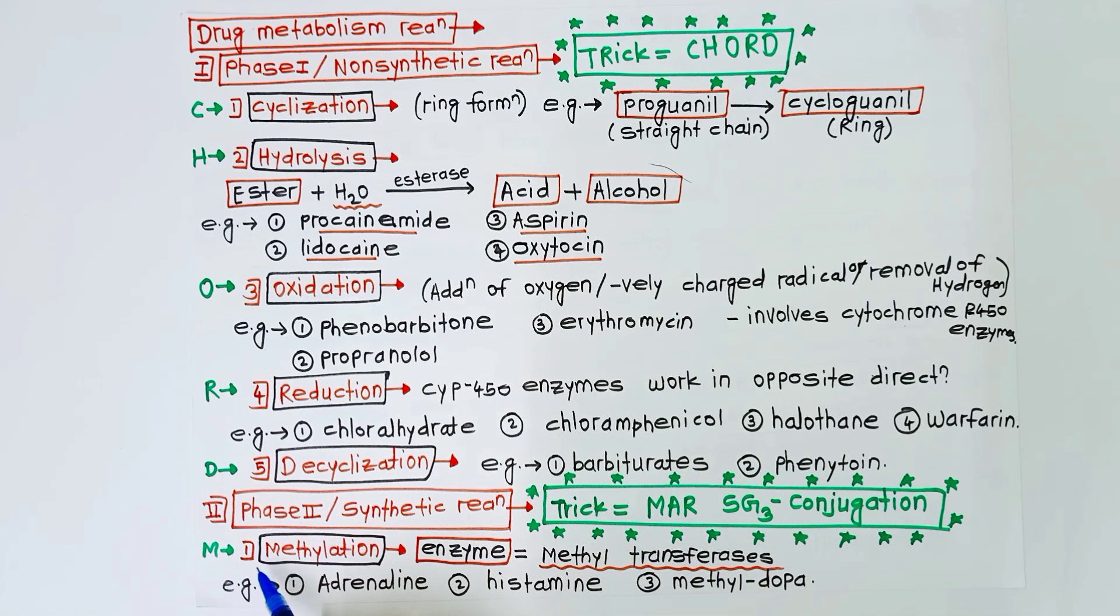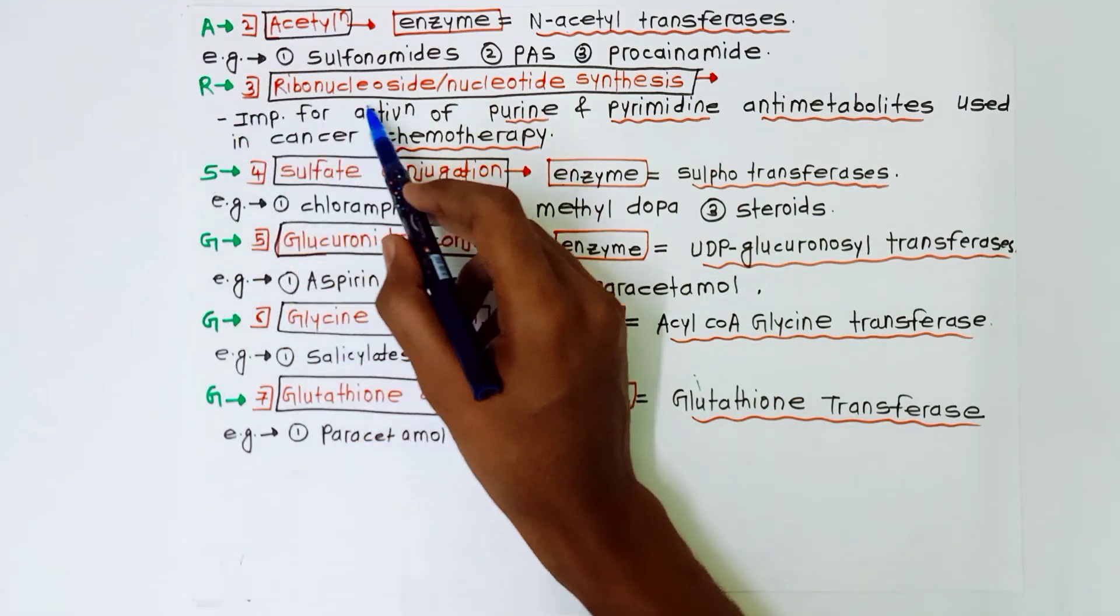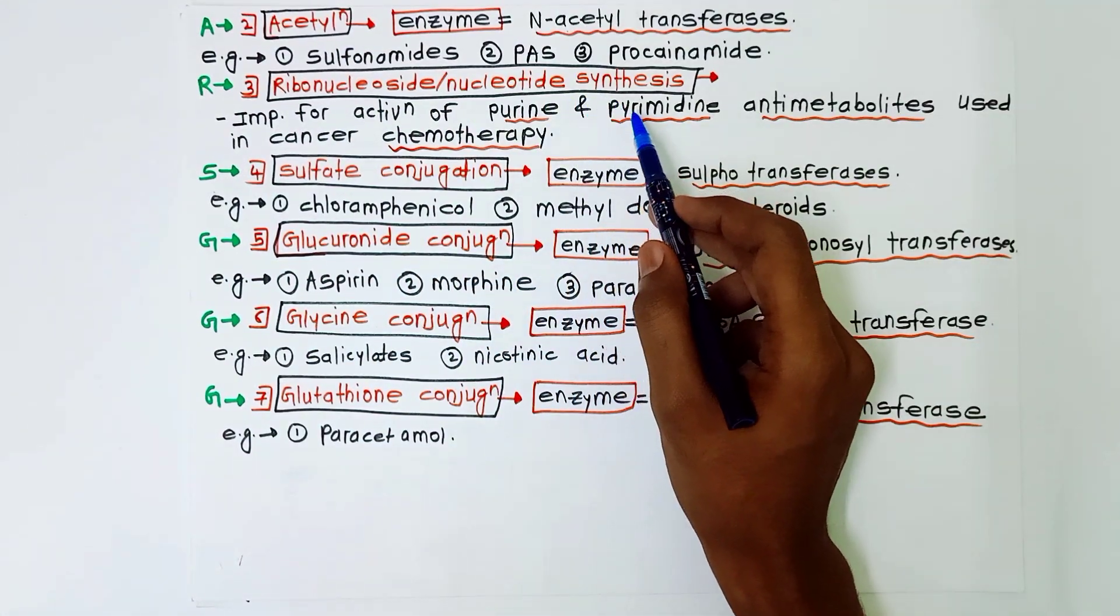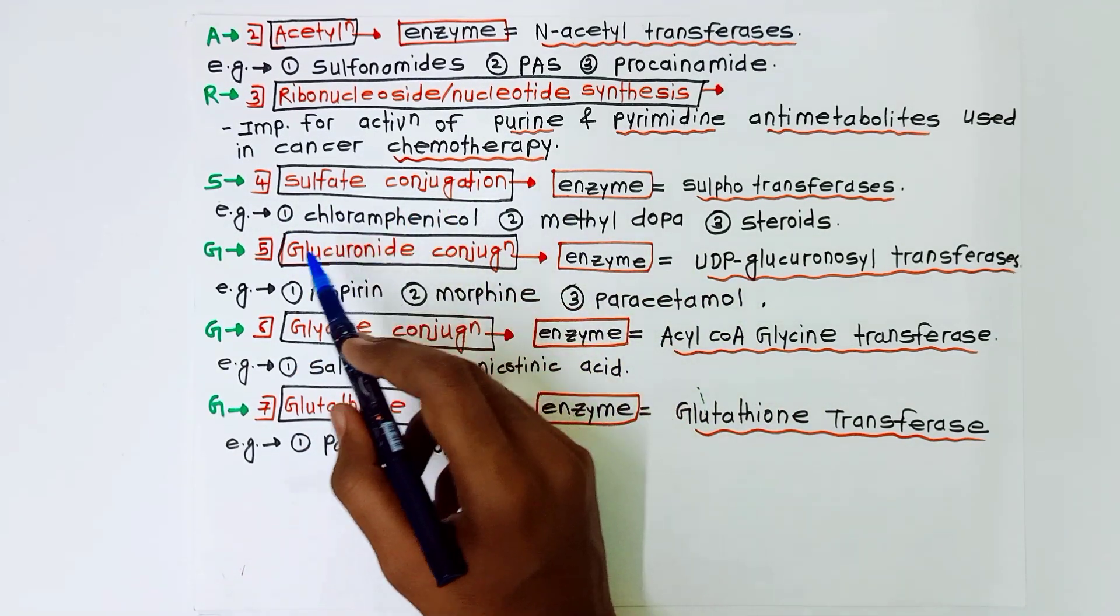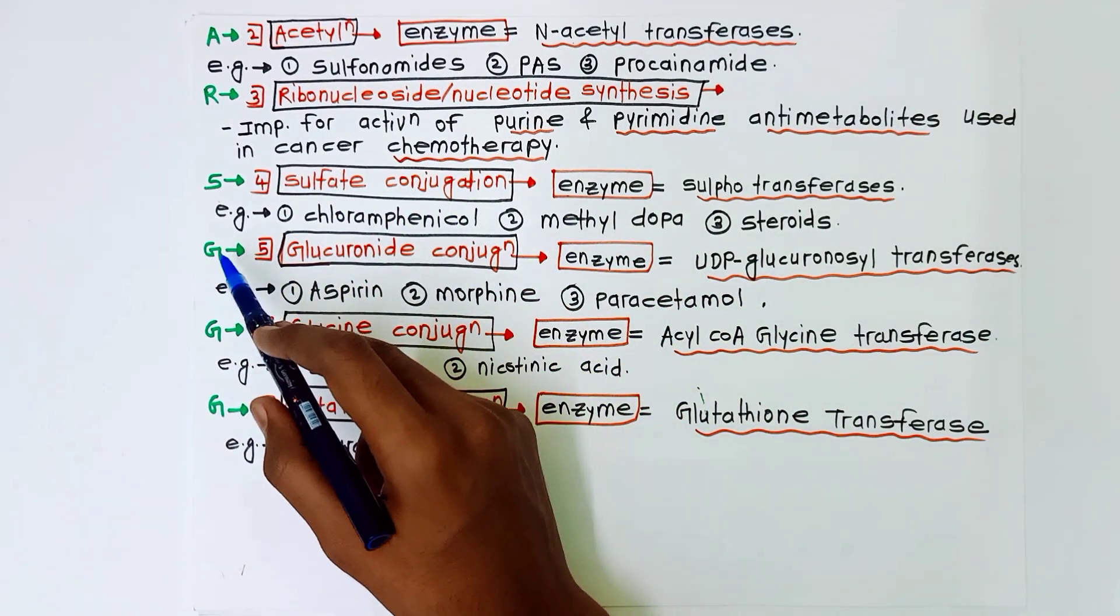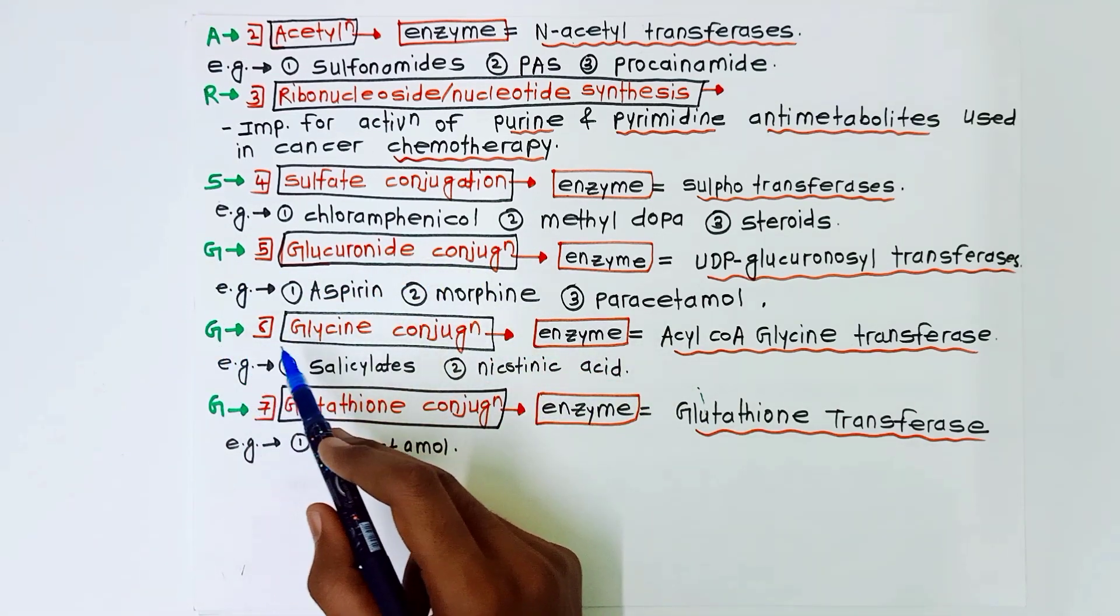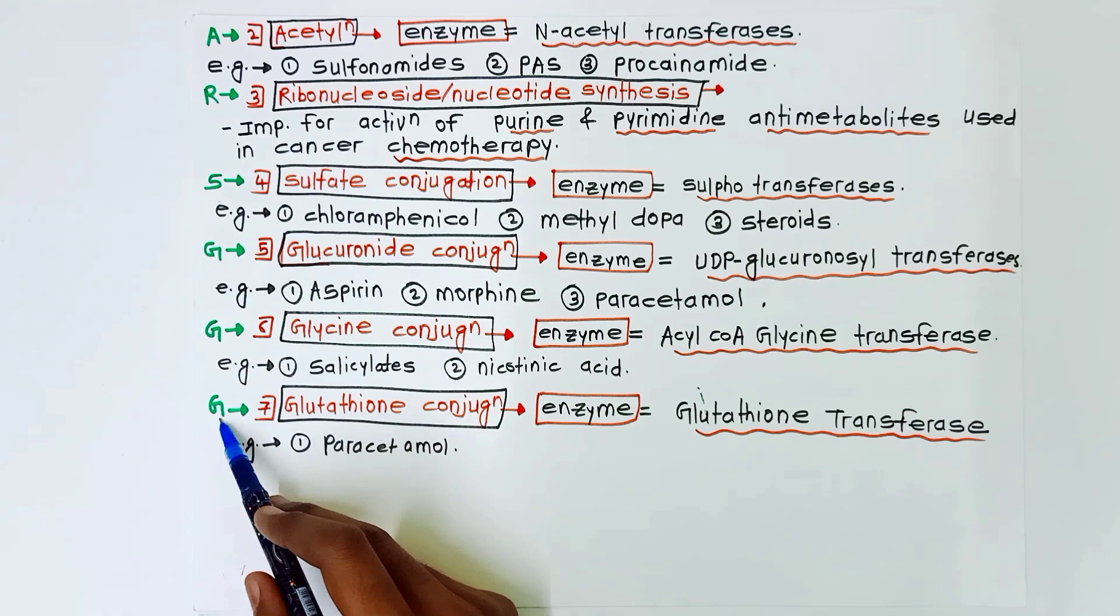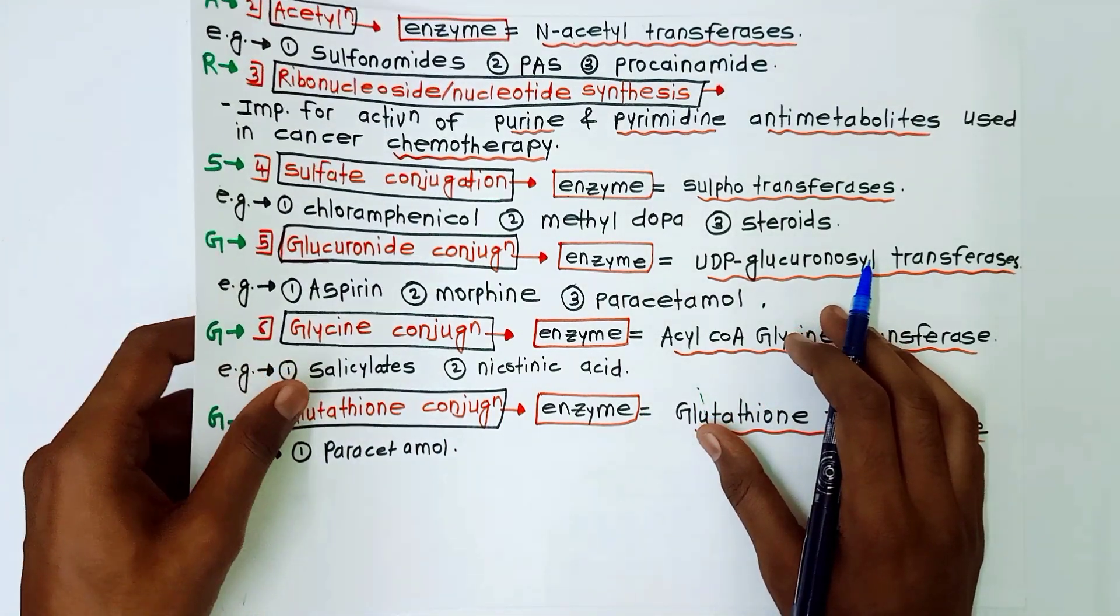M for methylation, A for acetylation, R for ribonucleoside or nucleotide synthesis, then S for sulfate conjugation, G for glucuronide conjugation, next G for glycine conjugation, and last G for glutathione conjugation. So we will learn this one by one.